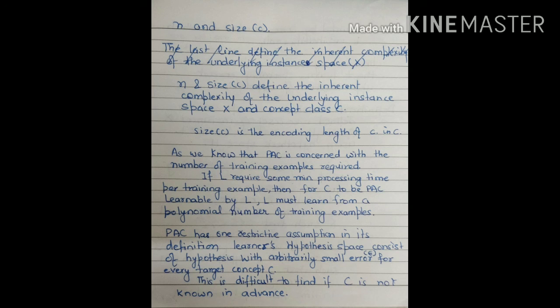Now let's look at the limitations of the PAC learnability model. PAC has one restrictive assumption: it considers hypotheses in the hypothesis space that have very small error — less than or equal to epsilon — for every target concept C. It is very difficult to find such a hypothesis if C is not known in advance. In the previous section we assumed C was given to the system, but if the target concept is not known to the learner, it cannot perform PAC learnability or find out the total number of training examples required.